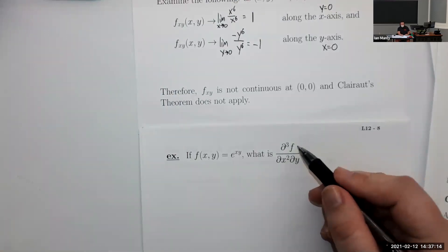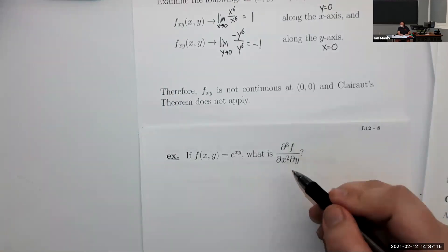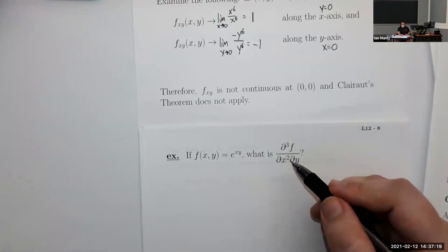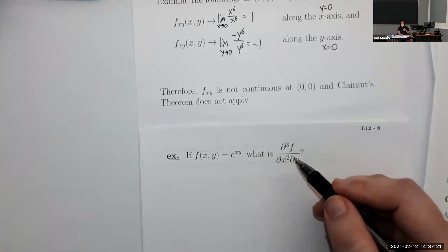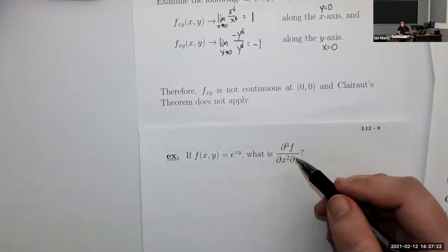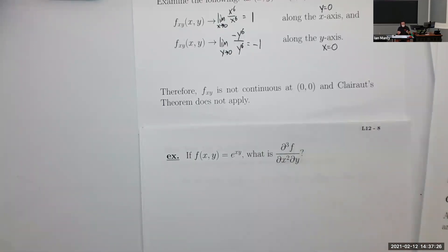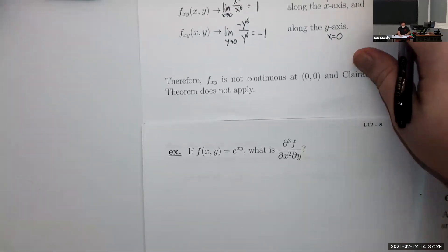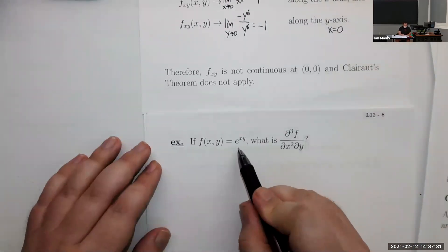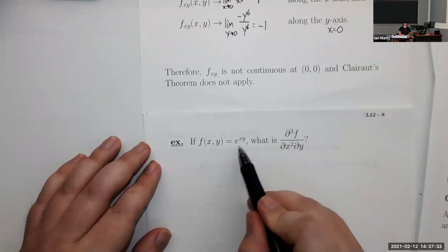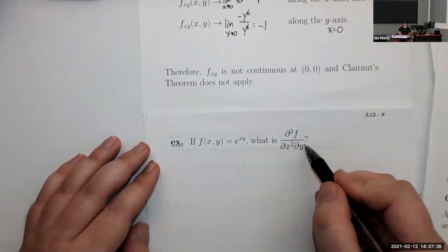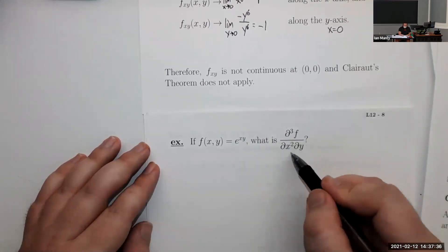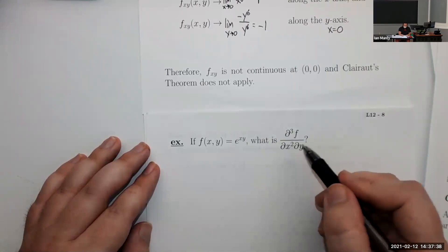Let's say for some reason we wanted to do the third derivative of a function. Most applications stop at the second derivative — often because Newton's second law only has two derivatives. But let's explore a third derivative. We have f(x,y) = e^(xy), and we need to do one y-derivative and then two x-derivatives.